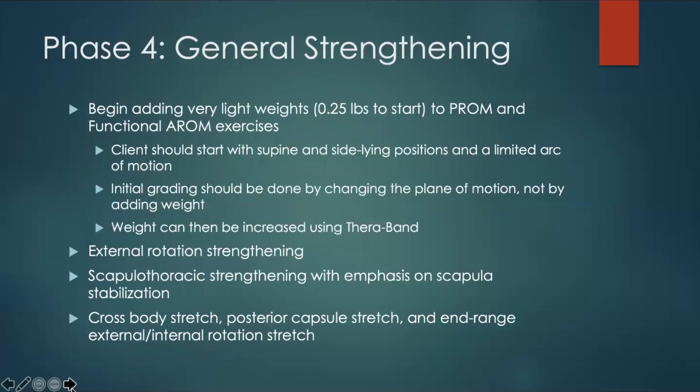Phase four begins to focus on strengthening the general movements of the rotator cuff. Weights should start off very light when added to the functional active range of motion exercises in the supine and sideline positions. When the client is ready to progress, first change their body position to increase the effect of gravity, and then weight can be increased slowly by using therabands rather than dumbbell-style weights.